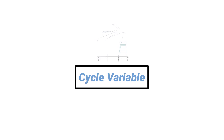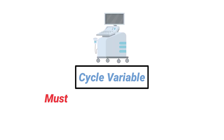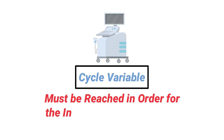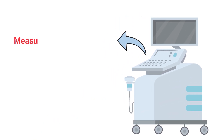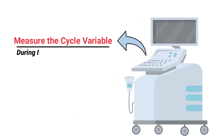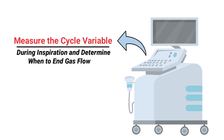A cycle variable on the mechanical ventilator must be reached in order for the inspiratory phase to end. The machine is able to measure the cycle variable during inspiration and determine when to end gas flow to transition to the expiratory phase.